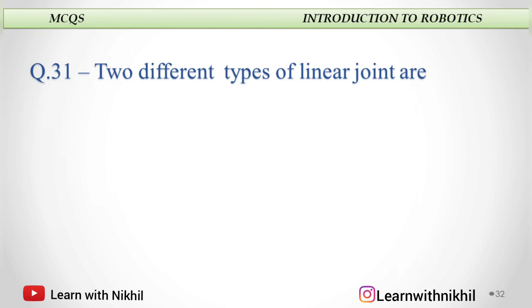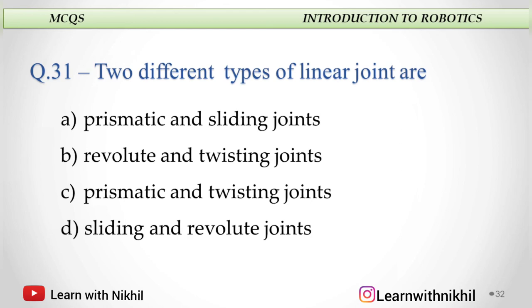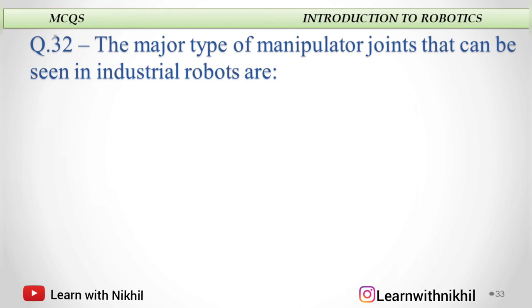Next: Two different types of linear joints are — prismatic and sliding, revolute and twisting, prismatic and twisting, or sliding and revolute? The linear types of joints are prismatic and sliding. So the answer is prismatic and sliding joints.